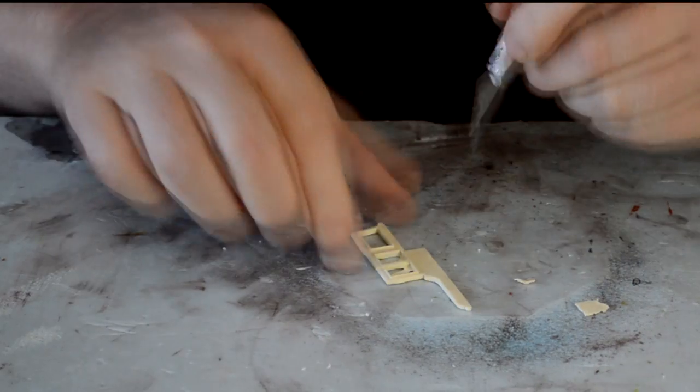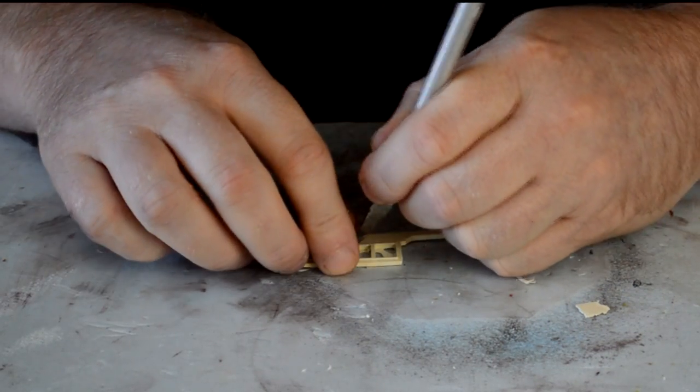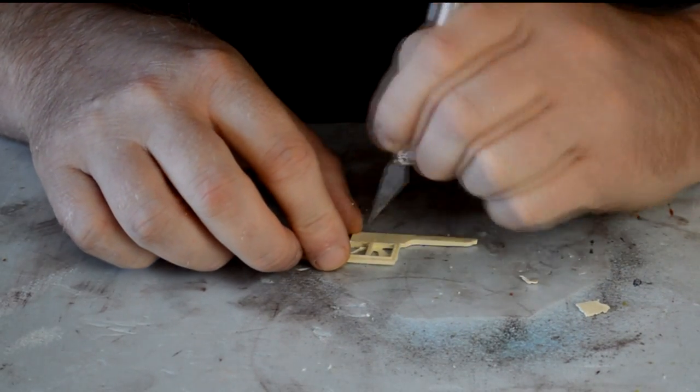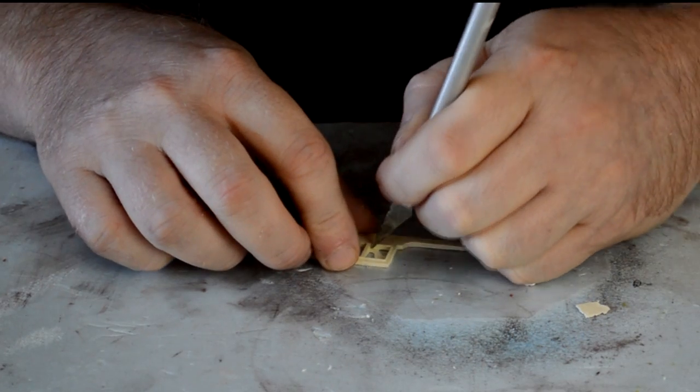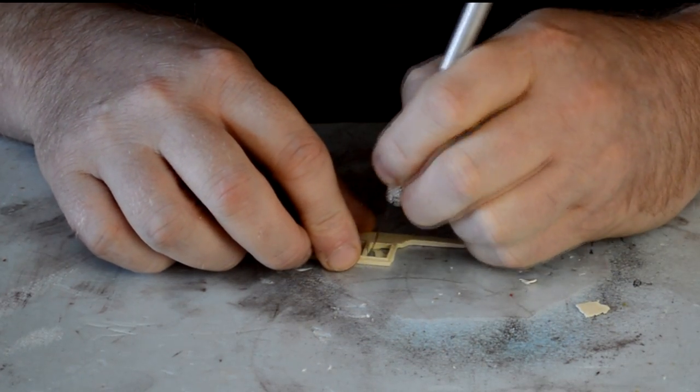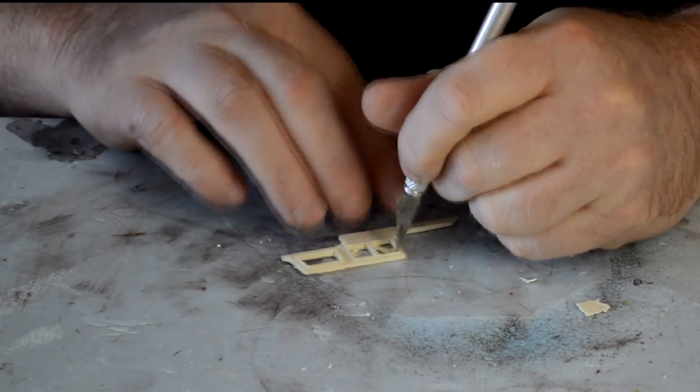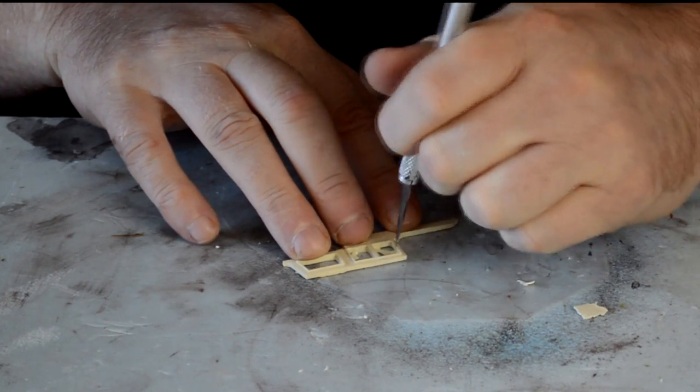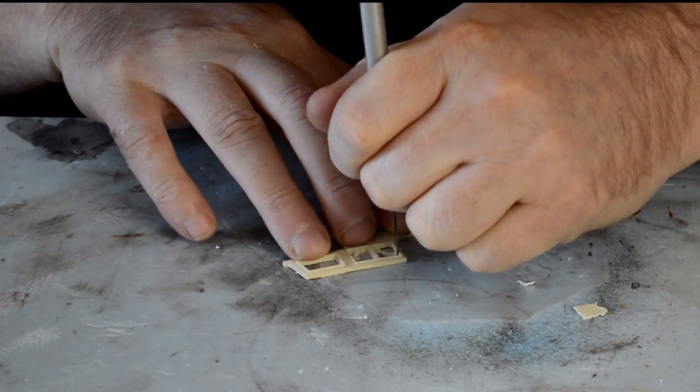After all the parts are cleaned with soap and water and all the flash has been taken off with the razor blade, I take them outside and prime them with my go-to primer Krylon camouflage of the color khaki.